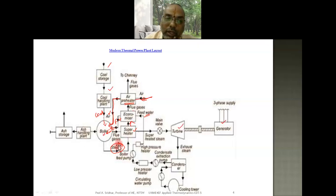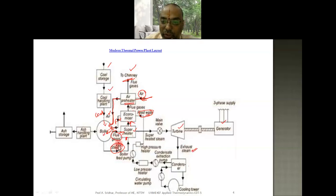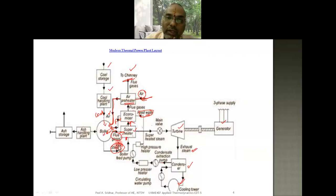From the turbine the steam goes to the generator. The flue gases leaving the boiler first go to the superheater, heating the steam, then to the economizer where they heat the feed water, and then to the air preheater where they heat the incoming air. Finally, the flue gases leave to the atmosphere through the chimney. The turbine exhaust steam goes to the condenser, which has a cooling tower. A condensate extraction pump then sends the condensate back as feed water to the economizer, completing the cycle.